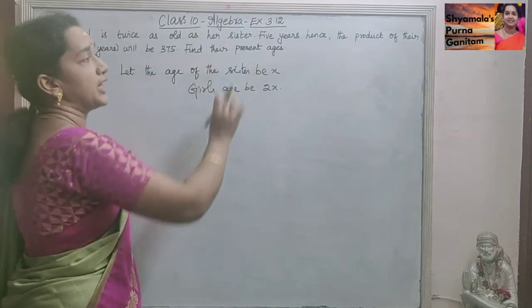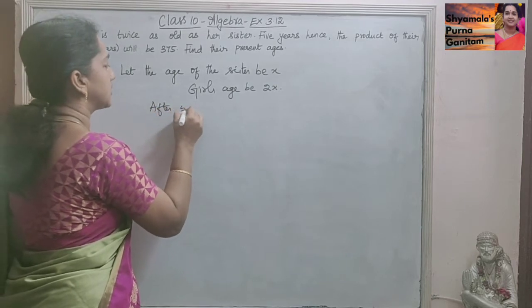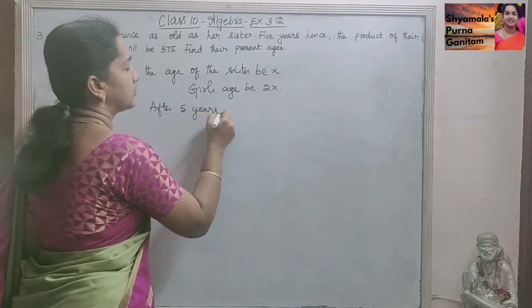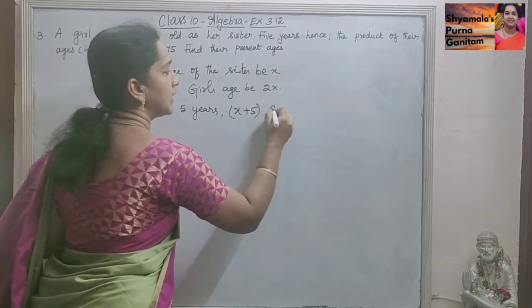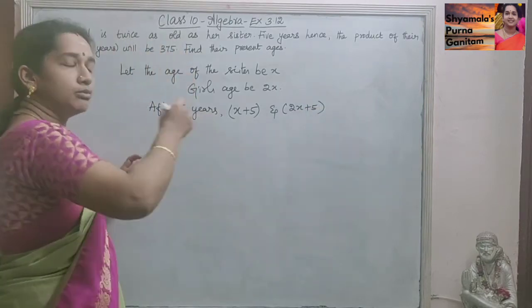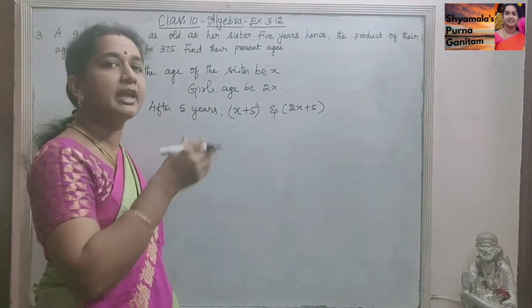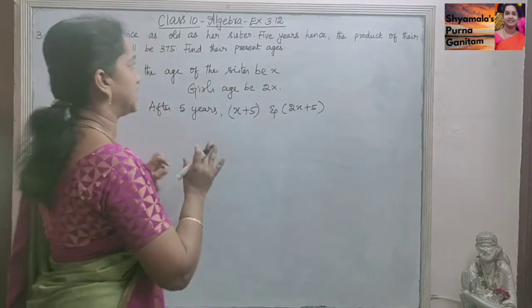Then 5 years hence. So after 5 years, both the ages will be X plus 5 and 2X plus 5. For both of them, the age will be increased by 5. So X plus 5 and 2X plus 5.